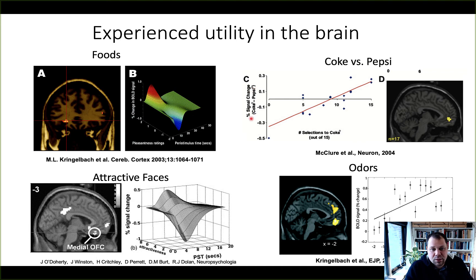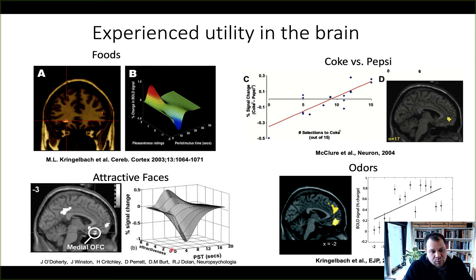The number of Coke selections reflects the preference for one versus the other, similar to pleasantness ratings, and this correlates with activation in the ventromedial prefrontal cortex. This has been replicated in other domains, such as attractive faces, which also show experienced utility outcomes in the medial orbitofrontal cortex. For low attractiveness ratings there's a decrease in activity in this region, and for high ratings there's an increase — so observing pleasant faces produces reward activation in medial OFC.